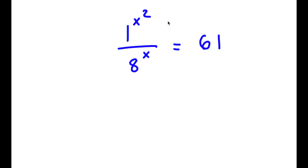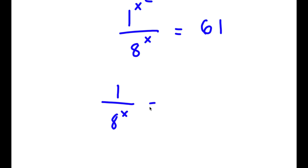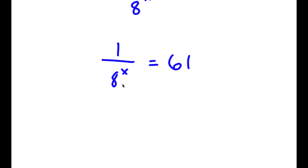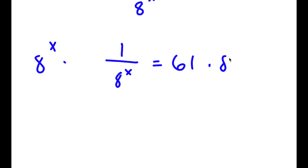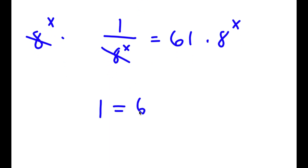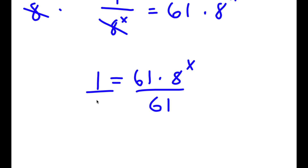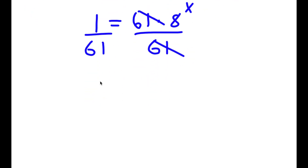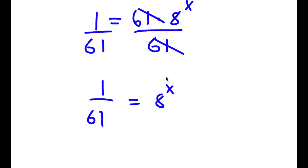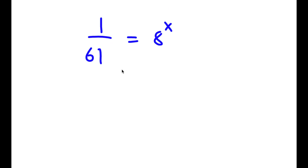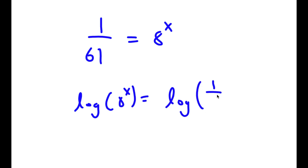In this problem, I have 1 to the power of x squared over 8 to the power of x is equal to 61. To solve this, first off, 1 to the power of any number is equal to 1. Meaning 1 to the power of x squared is simply equal to 1. So now I have 1 over 8 to the power of x is equal to 61. Now I'm going to multiply both sides by 8 to the power of x, so these cancel out, and now I have 1 is equal to 61 times 8 to the power of x. Now I'm going to divide both sides by 61, so these cancel out, and now I have 1 over 61 is equal to 8 to the power of x. To solve this, I'm going to take the log on both sides. So now I have log 8 to the power of x is equal to log of 1 over 61.